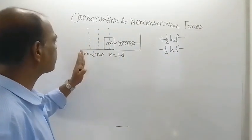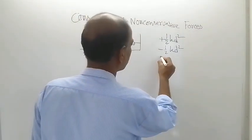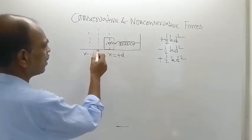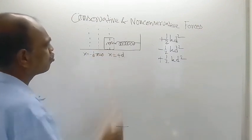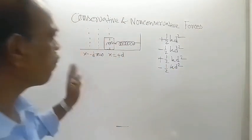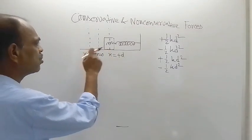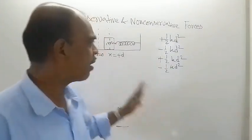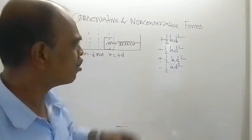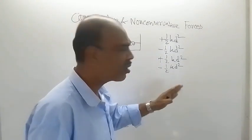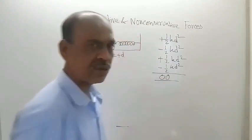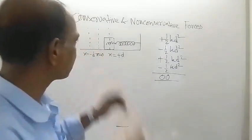Again, when the block moves from x = −d back to x = 0, work done is positive (+½kd²). And when it moves from x = 0 to x = +d, work done is −½kd². Now one complete cycle is finished — the starting point and end point are the same. If you sum up all four work done values, the total work done for this complete cyclic motion is zero.